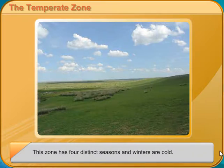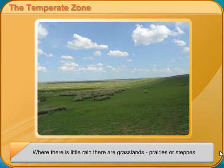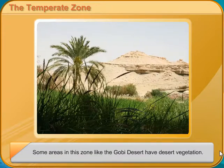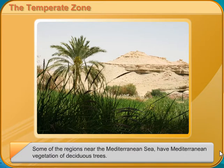This zone has four distinct seasons and winters are cold. The vegetation here varies according to temperature and rainfall. Where there is little rain, there are grasslands, prairies, or steppes. Some areas in this zone, like the Gobi Desert, have desert vegetation. The wetter regions have coniferous forests with tall, straight, evergreen trees with needle-like leaves. Some regions near the Mediterranean Sea have Mediterranean vegetation of deciduous trees.